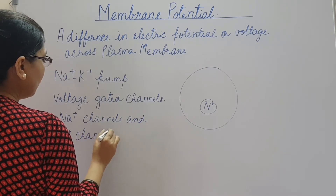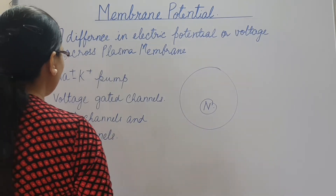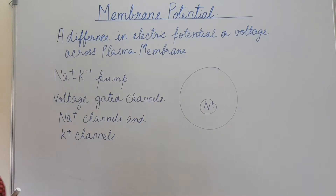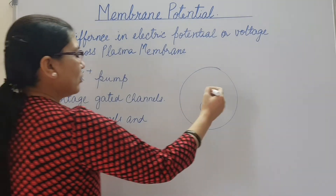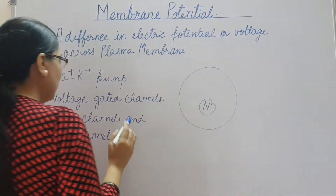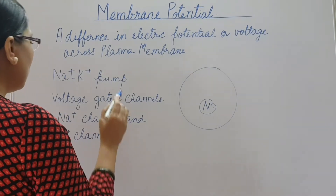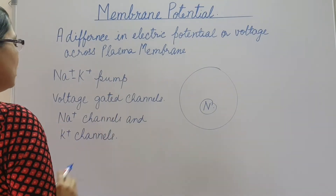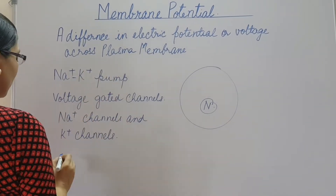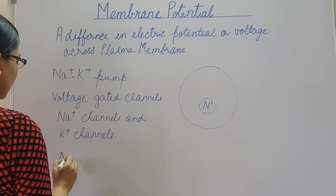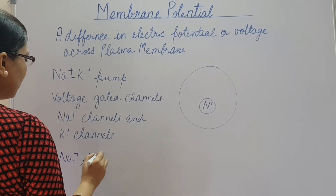In addition to sodium and potassium ions, there are other ions that also diffuse across the plasma membrane, but their contribution to the membrane potential is minimum. So the major ions responsible for the membrane potential are sodium and potassium ions.